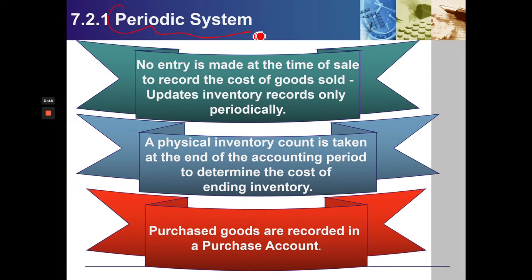Periodic System. No entry is made at the time of sale to record the cost of goods sold. It updates inventory records only periodically. A physical inventory count is taken at the end of the accounting period to determine the cost of ending inventory. Purchased goods are recorded in a purchase account.